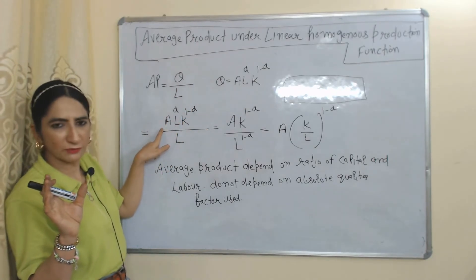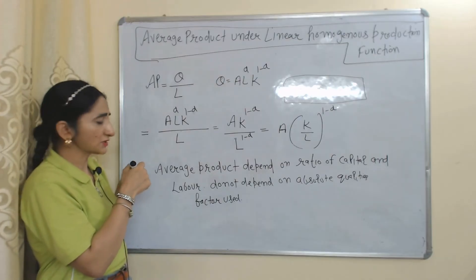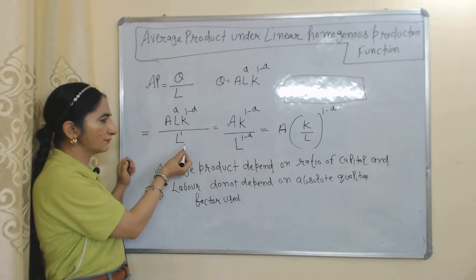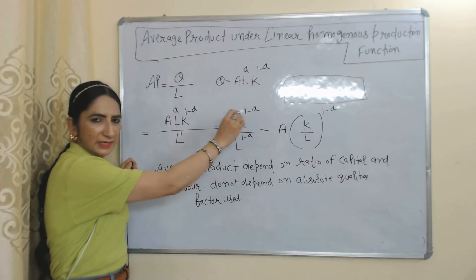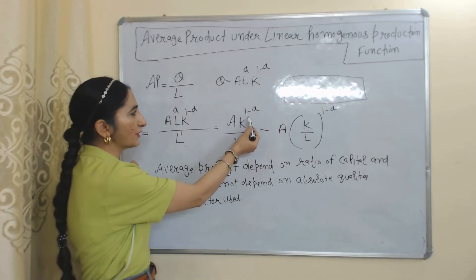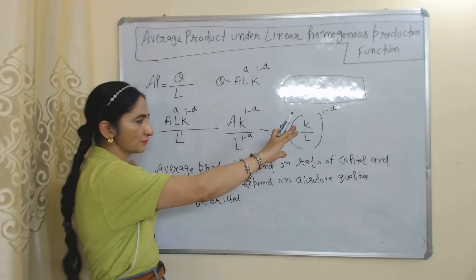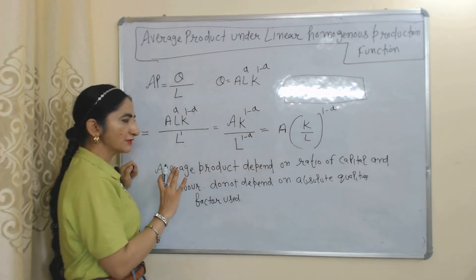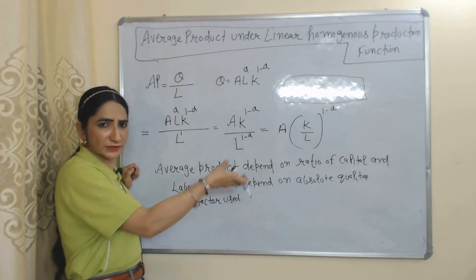We put the value of Q into the formula Q/L. Since L has no written power, its power equals 1. We bring L^α below, and after simplifying, the equation becomes: APL = A·(K/L)^(1−α). This is our final equation representing the average product of labor — A multiplied by the ratio of capital to labor raised to the power (1−α). This means average product depends on the ratio of capital to labor, not on the absolute quantities of factors of production used.